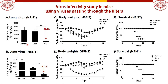As a result of infecting mice to determine the infectivity of virus passed through the filter, the virus titer in the lungs was significantly reduced in salt-coated filter groups compared to non-coated filter groups. Mice infected with H3N2 showed 100% survival rate in salt-coated filter groups. On the other hand, mice infected with H5N1 survived in all filter groups, but weight reduction was shown in non-coated filter groups compared to salt-coated filter groups.